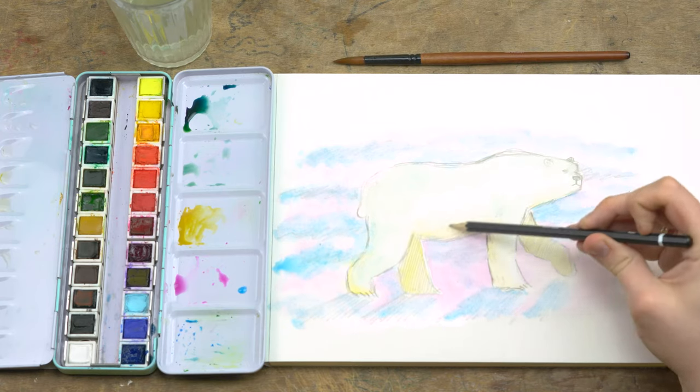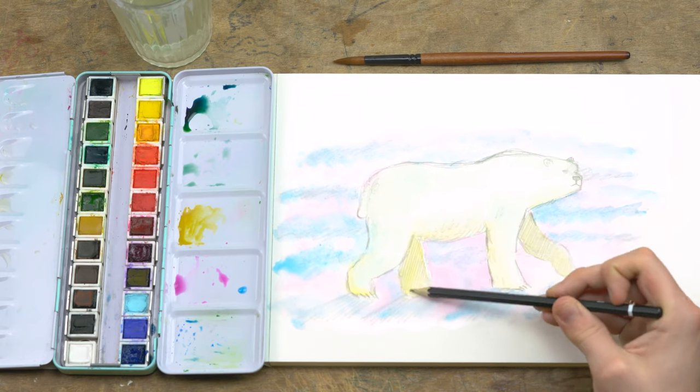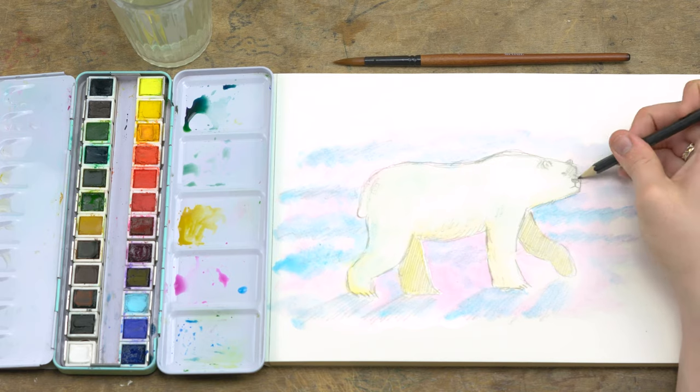Sometimes when you add water on top of a pencil line you do wash out the thickness of the line, so if you do want to just sharpen it or make it a bit more dark then you can add more pencil once the paint's dry.